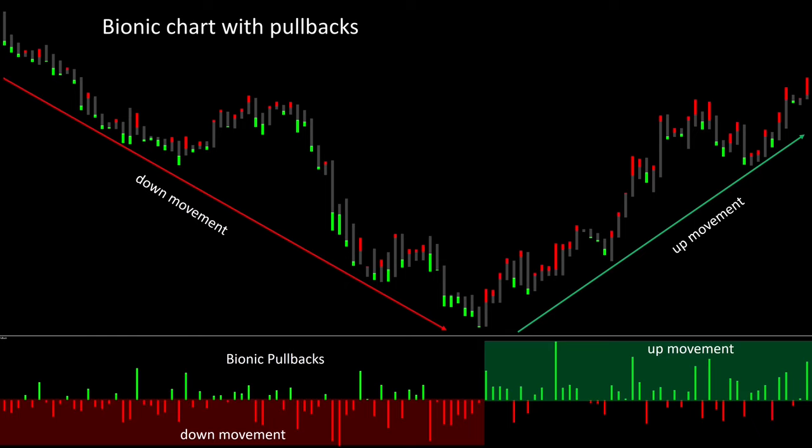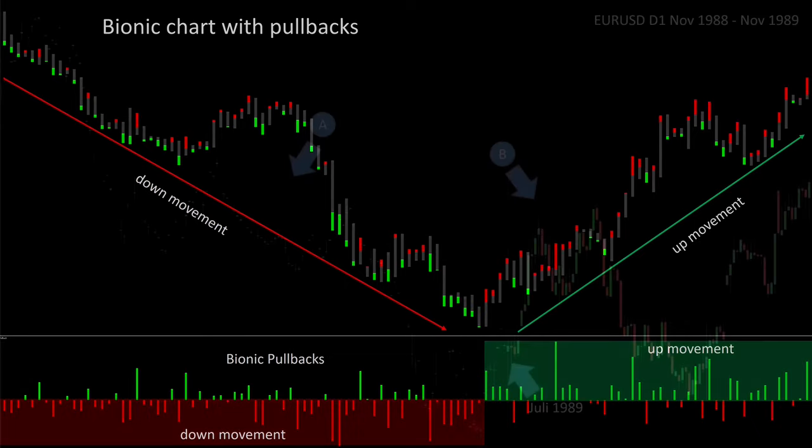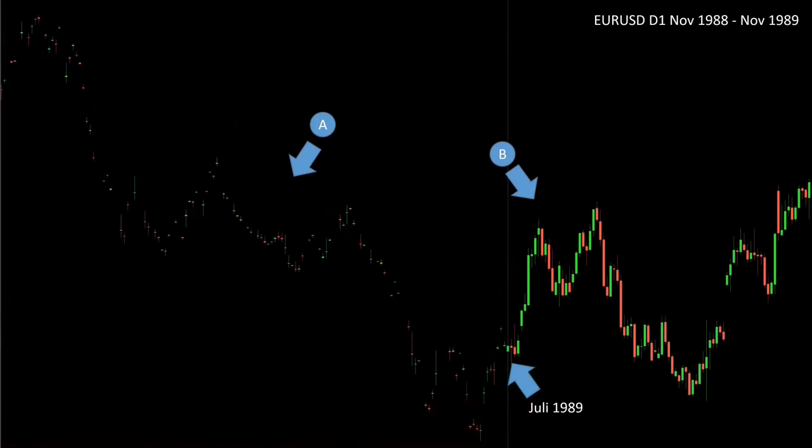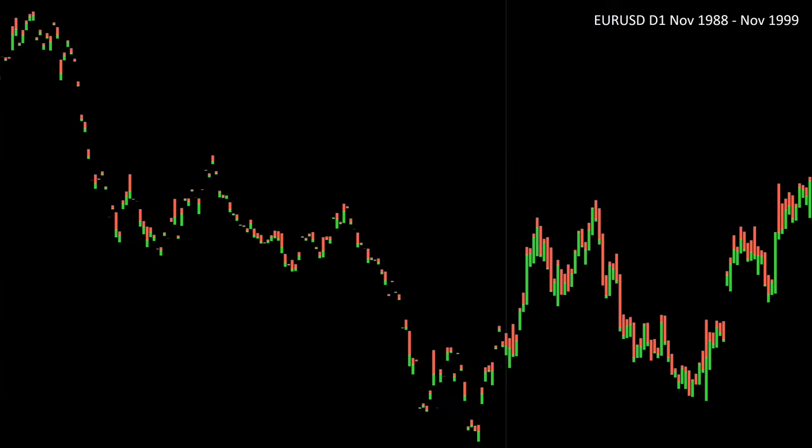We can also see that the bullish pullbacks are significantly stronger within a downward movement, while the bearish pullbacks are advantageous in an upward movement. Here we see a chart image from 1988, when the EURUSD rates looked relatively unclear. With the bionic candle, unclear courses are presented much better, which is clearly an advantage if you are on the move in small units of time.